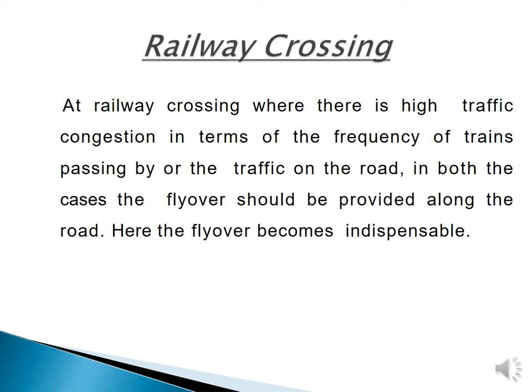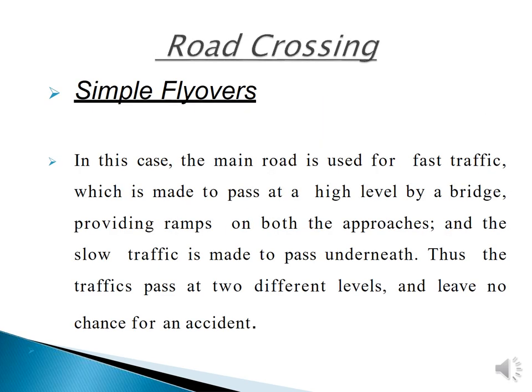In a simple flyover road crossing, the main road is used for fast traffic, which is made to pass at a high level via a bridge. Ramps are provided on both approaches, and slow traffic is made to pass underneath. Traffic passes at two different levels, leaving no chance for accidents. This allows vehicles to pass both below and above the roadway.